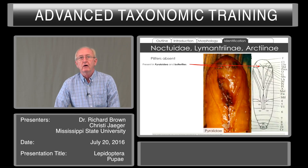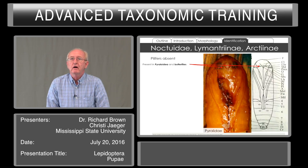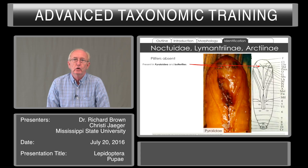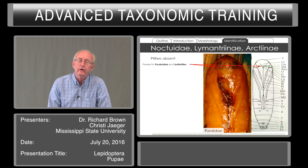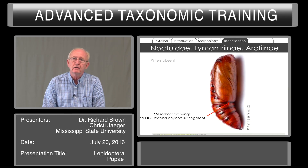In the Lymantriidae, Arctiinae, and Noctuidae, pilifers are absent. These are analogous to what were formerly called mandibles — the little lobes — and you can see them in these images. The pilifers are absent in these groups, but they're present in Pyraloidea and in butterflies. The mesothoracic wings do not extend beyond the fourth segment of the abdomen in Noctuidae, Lymantriidae, and Arctiinae — relatively short wings.